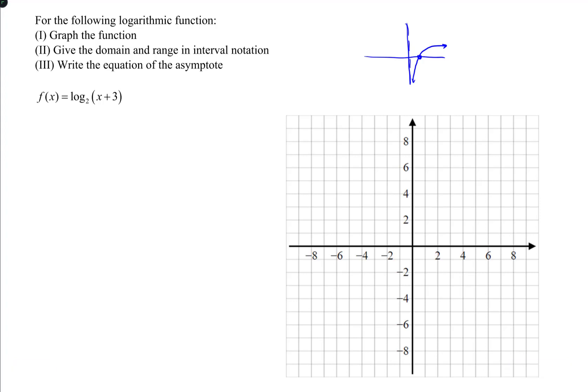So the changes that can happen here with logarithms, if there were any constants added on the outside of the logarithm, that would be a vertical shift. But we don't have any in this case, but there is a value added to the inside of the logarithm, and that's going to be a horizontal shift. And horizontal shifts go in the opposite direction of their sign, so in this case everything's going to be moved to the left by three units, including the asymptote.